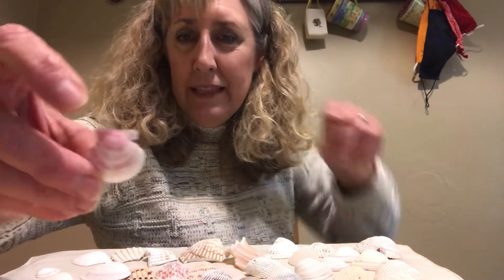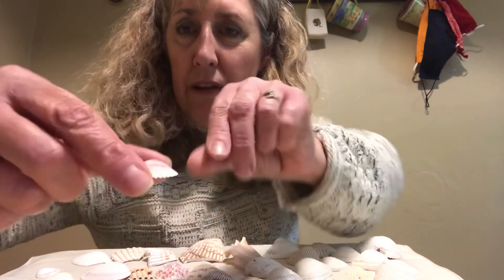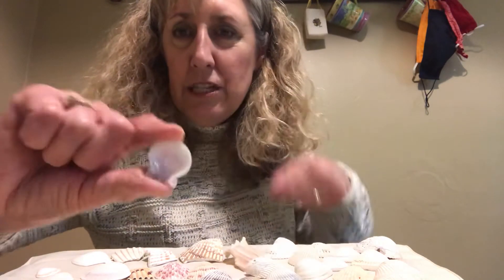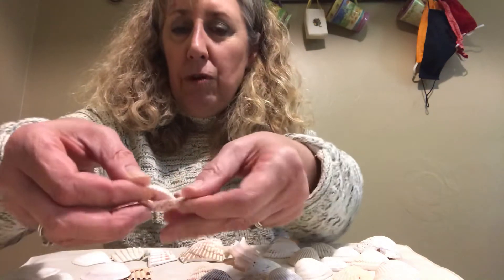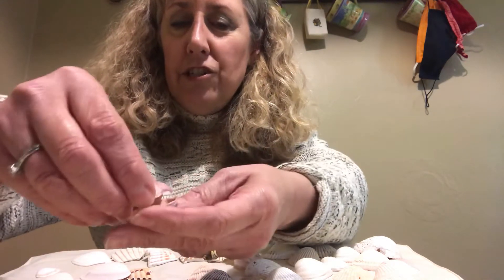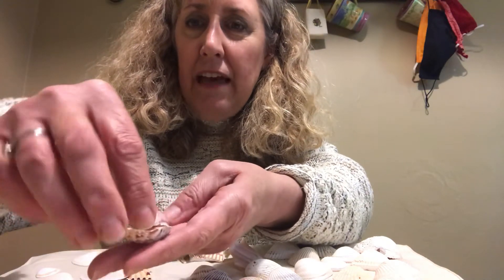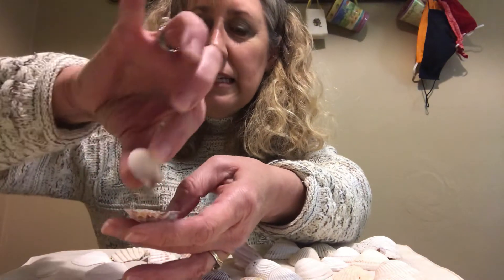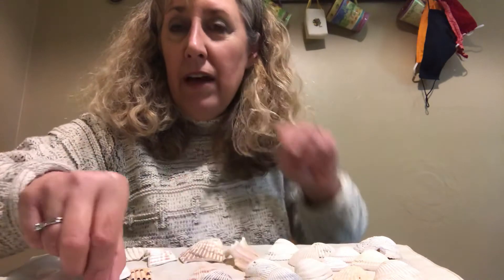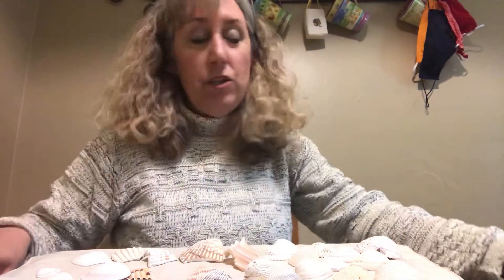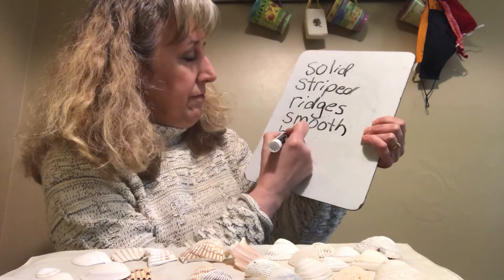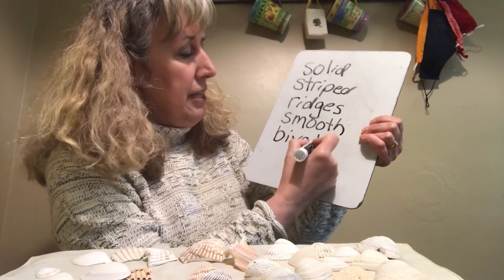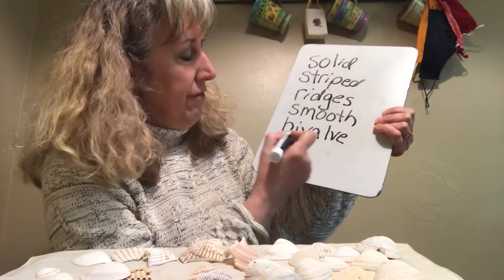What about bivalve shells? I think this one is so pretty — look at the pink color! Right here is where the hinge would be, where this shell would have another piece and would open and close. These two pieces don't go together but it gives you an idea of how the shell works. It would be hooked together in the back and would open and close like this. So we have bivalve and we have horn shells, and we could sort them that way.